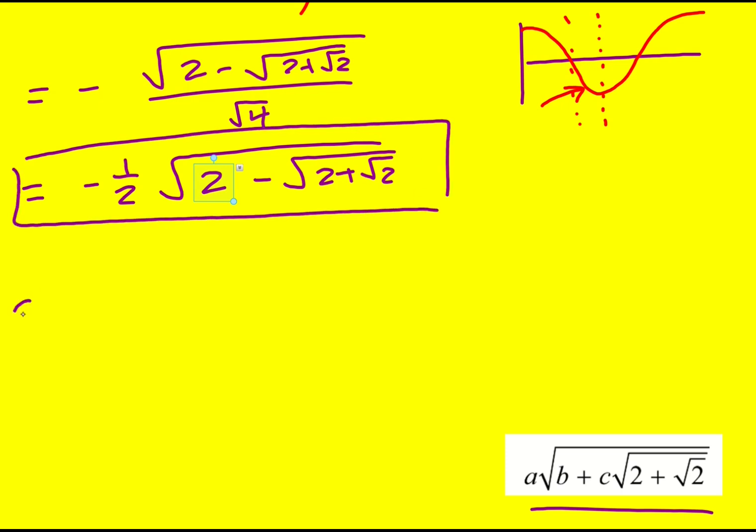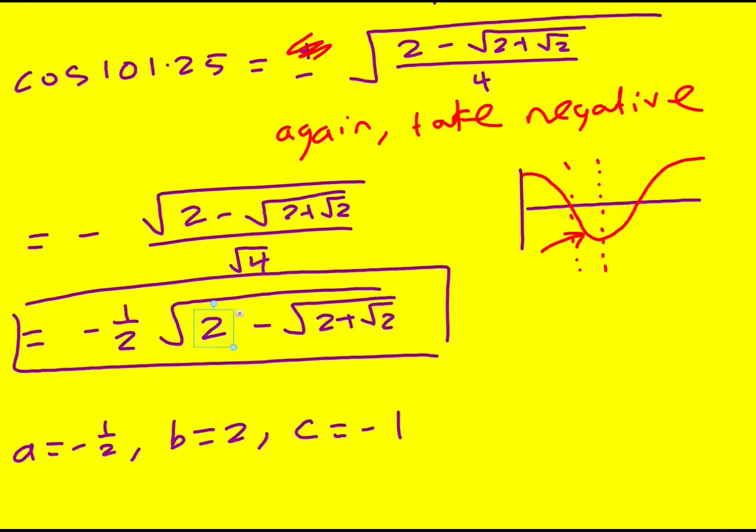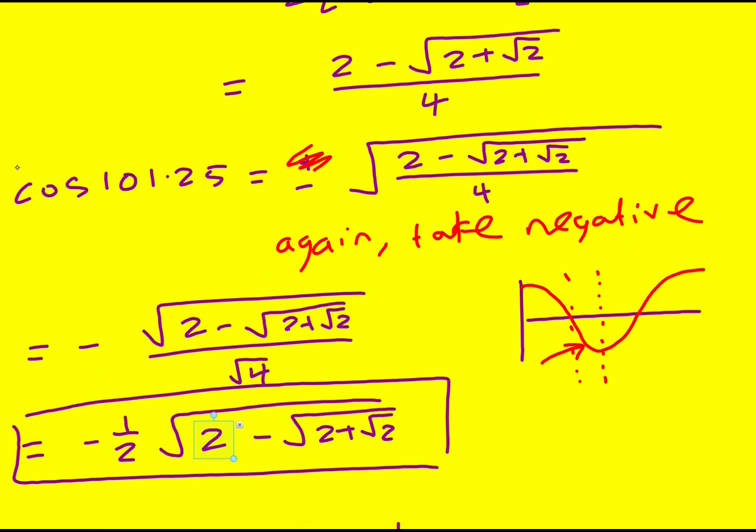If I'm being extra careful, I might just then say that A is minus 1 half, B is 2, and C is going to be minus 1. So lovely method for finding the exact value of cos 101.25°. Well done.